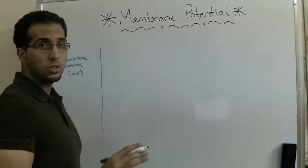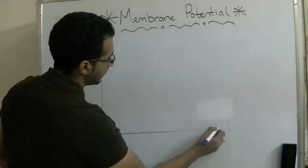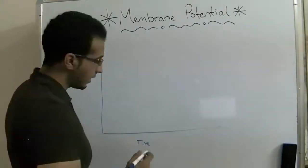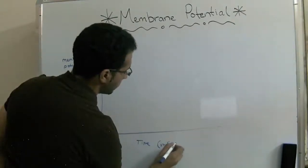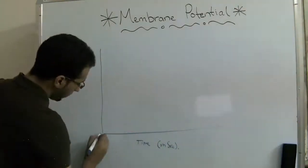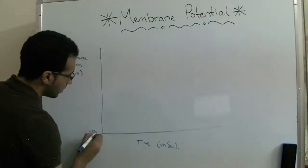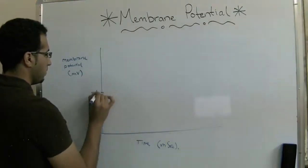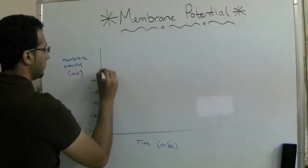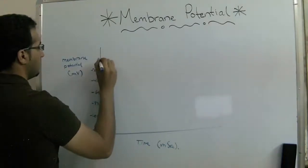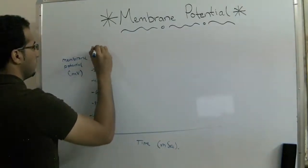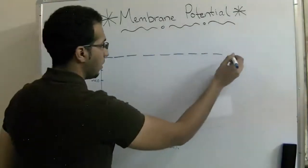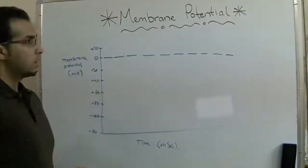And it will have horizontally the time, and the time is measured in milliseconds. We'll start the graph from negative 70. And we're going to make a dashed line over here to make things clearer for our graph.